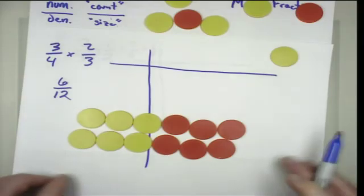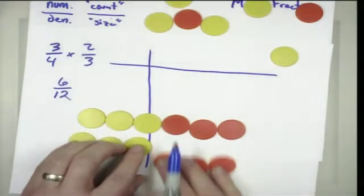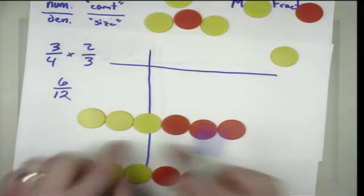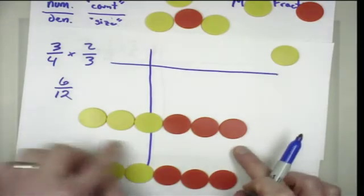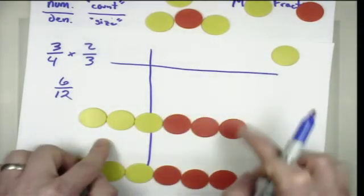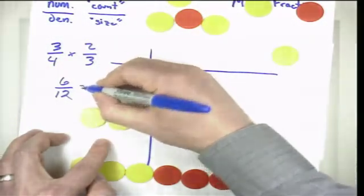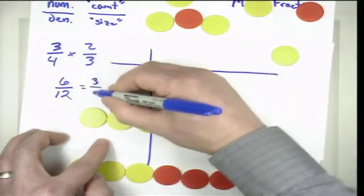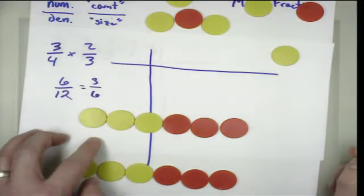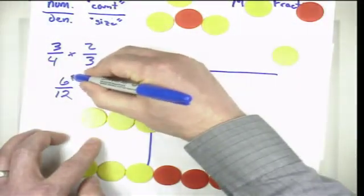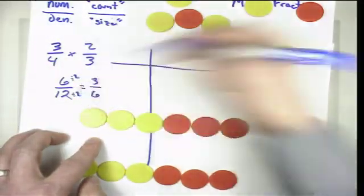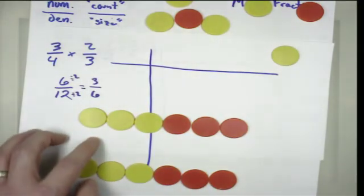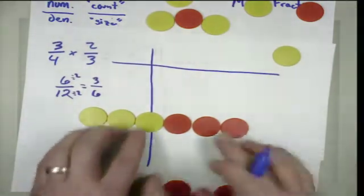Now I can divide this by two. And what we see is now we have a group of three count out of a size of six. So six divided by 12 must be the same as a count of three out of a group of six. Essentially what we've done is we've divided the numerator by two and the denominator by two. Now three-sixths still isn't reduced, so I can continue that process.